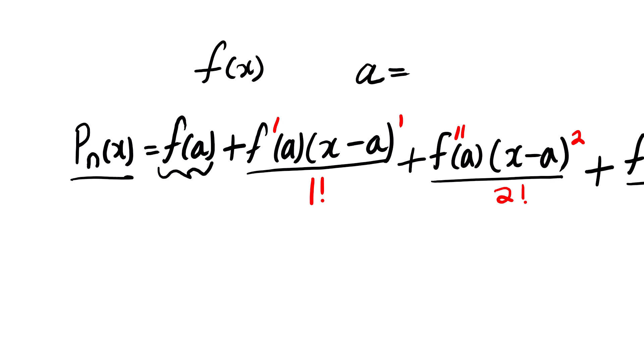Not just the first derivative, but also the second derivative. The first term of the Taylor series polynomial: take your f(x) and substitute the given point — that gives the first term. For the second term, find the first derivative, substitute the given point, and multiply by (x − a)¹ divided by factorial 1.